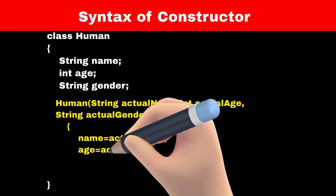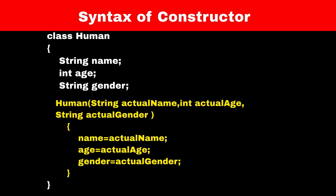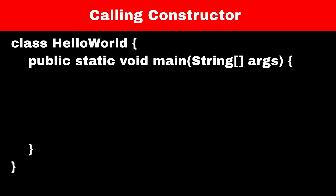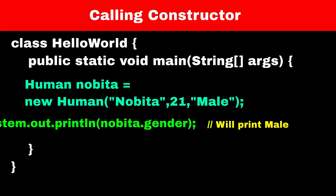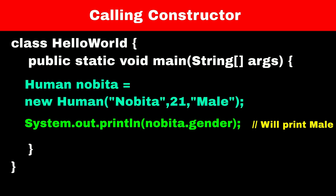So we will create a function which will receive 3 parameters: actual name, actual age, and actual gender. We will assign these values to our class variables. So whenever we create an object of a class, the constructor will initialize these variables for us. Now let's create an object of a human class in the main method, and while creating it we will pass the name, age, and gender to the object. Now if you try to access the variable using the object then you can see the values that you assigned to it.